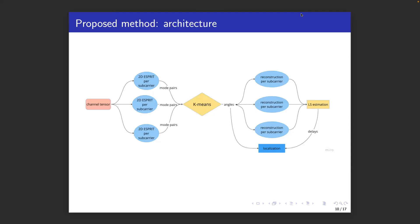The overall structure of our method is shown here. First, we break up the 3D tensor in 2D matrices, one per subcarrier. Then, we perform two-dimensional Esprit per subcarrier, which gives us paired angle of arrival and angle of departure, but, as we said, does not preserve the ordering of the paths.